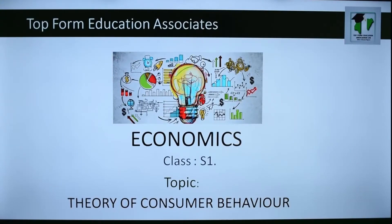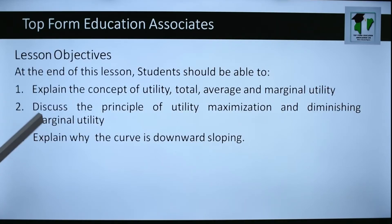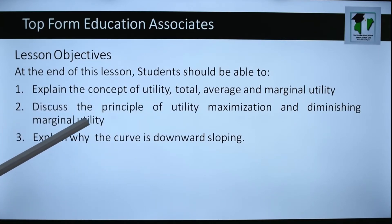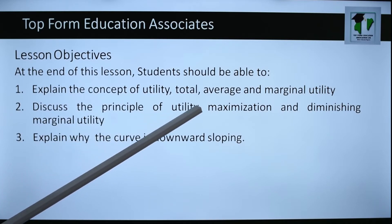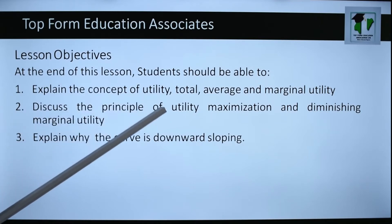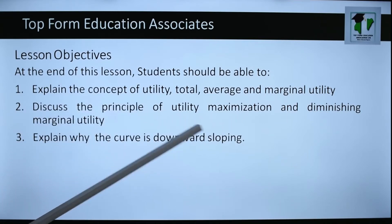Good day students, welcome to this new day. Today we are going to look at the Theory of Consumer Behavior. Lesson objectives: at the end of this lesson, students should be able to: one, explain the concept of utility, total, average and marginal utility; two, discuss the principle of utility maximization and diminishing marginal utility.